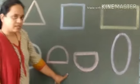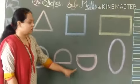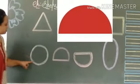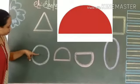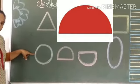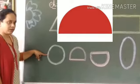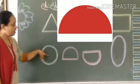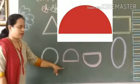Semi-circle. The semi-circle is half of the circle. Semi-circle — circle ka half.